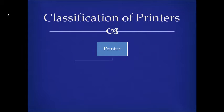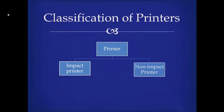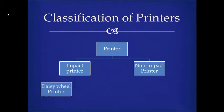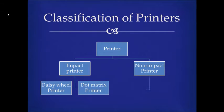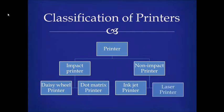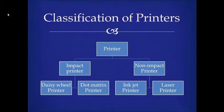Classification of Printers: Based on technology of printing, printers can be broadly divided into two — impact printers and non-impact printers. Daisy wheel printer and dot matrix printer are impact printers. Inkjet printer and laser printer are non-impact printers.